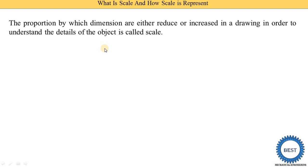Some objects are smaller, like a watch, various electronic items, and screws. We are not able to draw smaller objects at full size because objects measured in millimeters — such as 5 mm or 10 mm — are also difficult to draw and read on paper. When the object size is smaller, we need to draw it in a bigger size. This is called the enlarged scale. Some objects are of a perfect size, so we draw them at the same scale — that is called full scale. That is why scale is important.